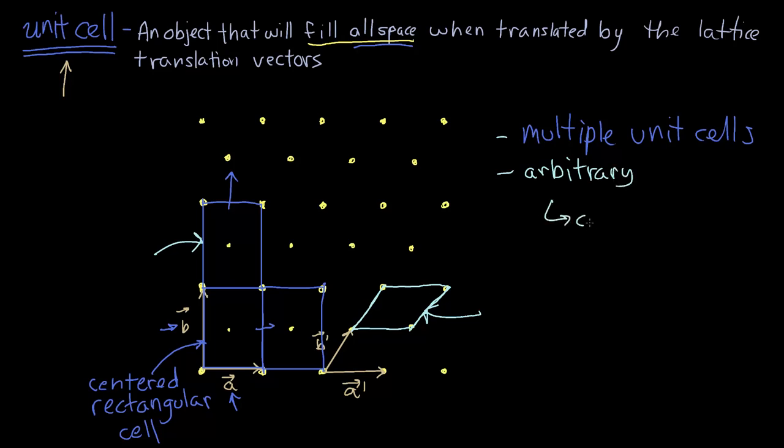It's up to the convenience of it. So a particular problem may be better worked out by using the centered rectangular cell than this parallelogram cell. This cell in particular also has a name. It would be the primitive cell.